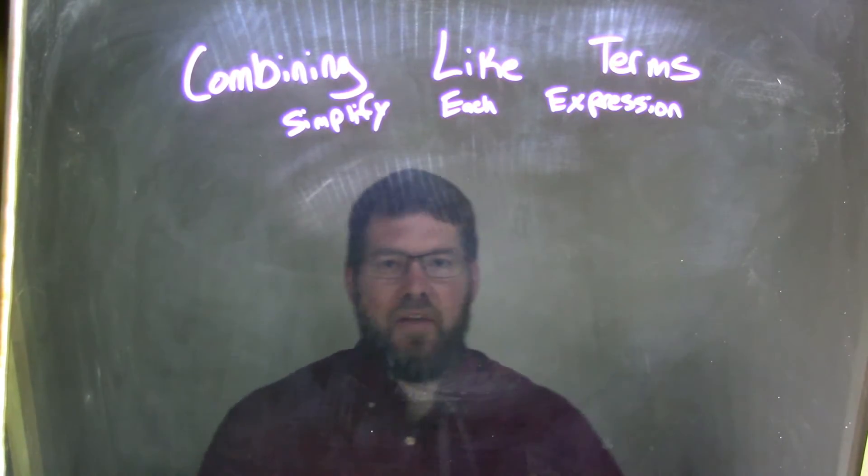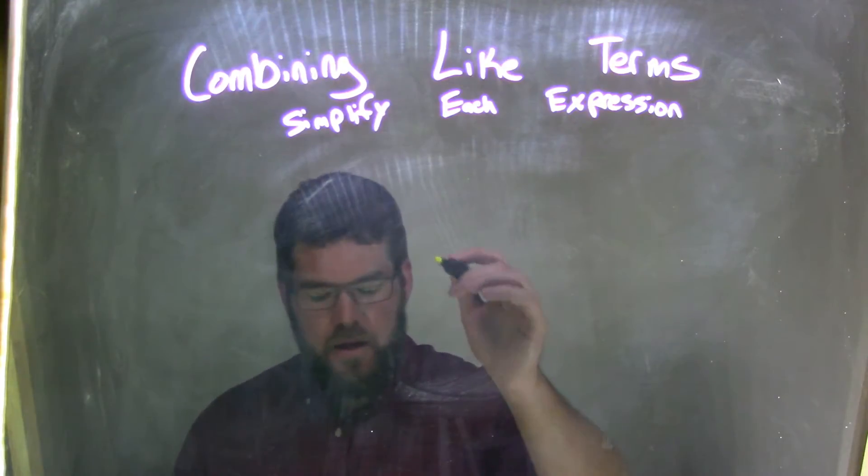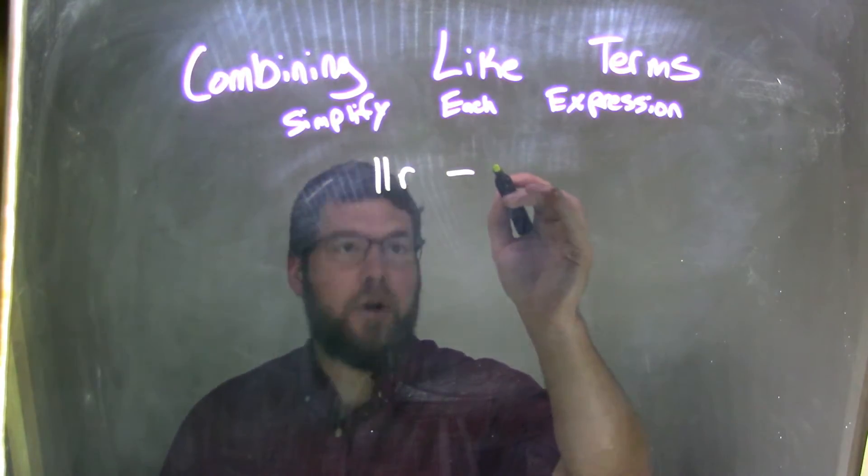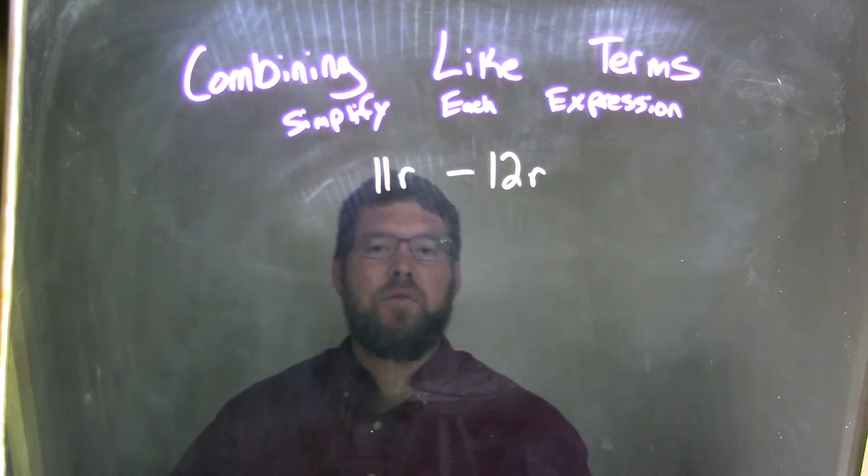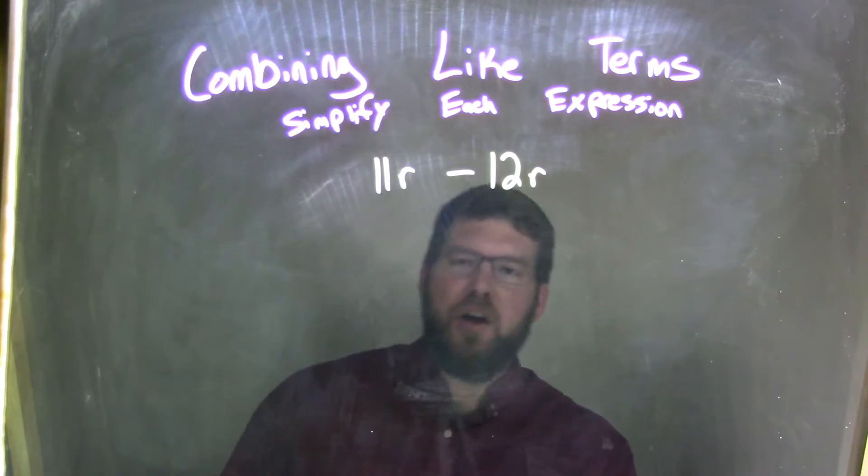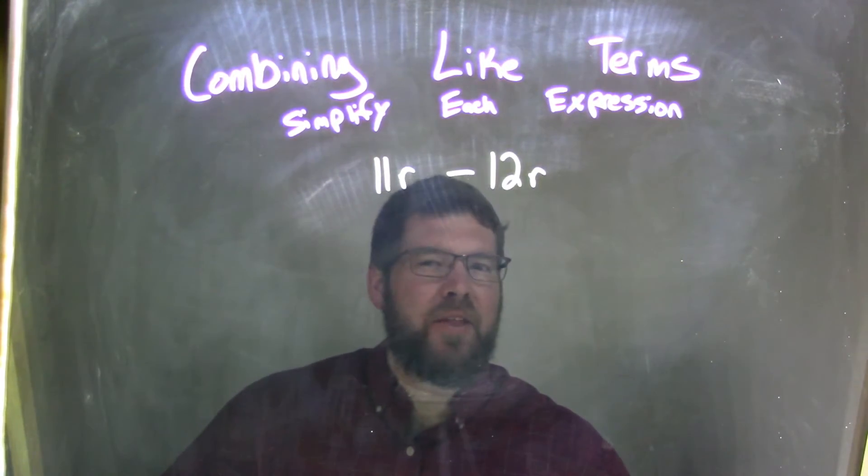If I was given this expression, 11r minus 12r. So, 11r minus 12r. Well, this one's a little tricky, okay? So, let's go look at our number line. I like to go with the number line on this one.